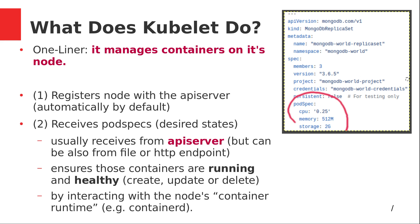There will be a pod spec in any manifest that needs a pod to be created. Kubelet receives a pod spec — a desired state for a pod — usually from the API server, though it can also get it from a file or an HTTP endpoint, which is quite unusual. It will ensure, according to the pod spec, that those containers are running and healthy, and it will do create, update, delete, or anything else necessary in order to achieve the desired state.